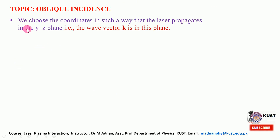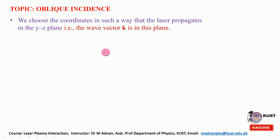To start with, we choose coordinates such that the laser propagates in the y-z plane — that is, the wave vector is in this plane. The wave vector k has components ky and kz. That is, the laser propagates in a two-dimensional plane having wave vector components ky and kz.